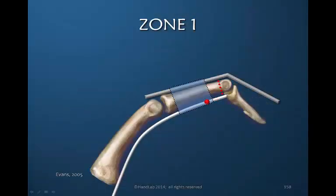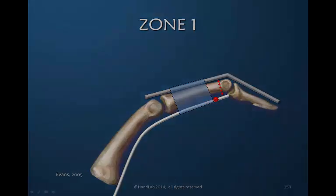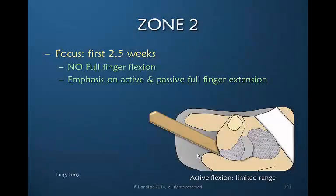Going from that position into further flexion gives you proximal glide. Tang often uses a tongue depressor to place the MP joint in greater flexion than the orthosis, to facilitate an emphasis on active and passive full finger extension.